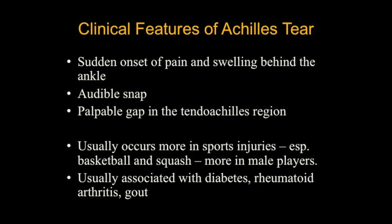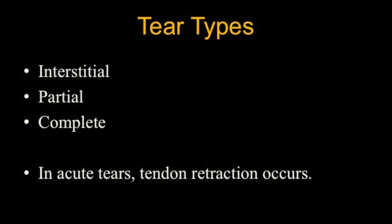Coming to the clinical features of Achilles tear: the tear occurs most commonly as part of sports injuries, especially basketball and squash, with a male preponderance. Certain systemic illnesses also lead to Achilles tear, especially diabetes, rheumatoid arthritis, gout, etc. Typically there is a sudden onset of pain and swelling of the ankle, sometimes an audible snap, and a palpable gap can be felt by the orthopedic surgeon. Tear types are mainly three: interstitial or intra-substance, partial, and complete. In acute tears there is a definite amount of tendon retraction.